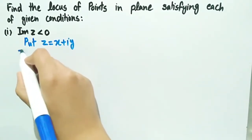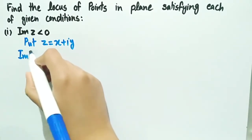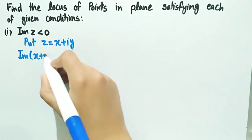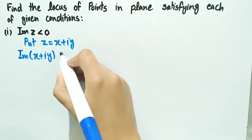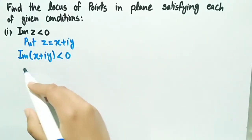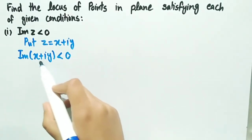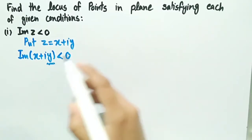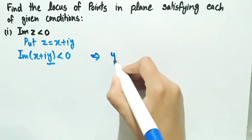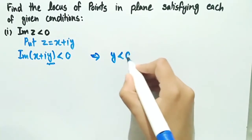Then we get imaginary part of x plus iota y is less than zero. We can see that the imaginary part of this complex number is y, so we can write it as y is less than zero.